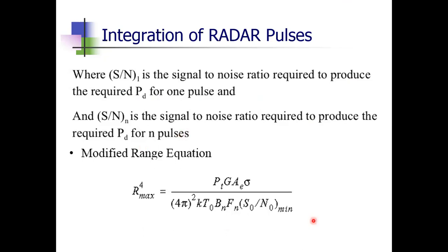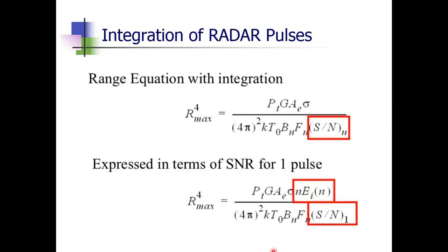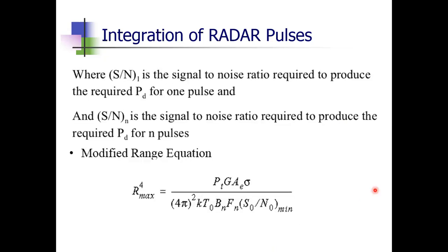The expression shown is the modified radar range equation derived in previous topics: Rmax⁴ = Pt × G × Ae × σ / (4π)² × kTB × Fn × (S/N)out. Here kTB is the input noise, Fn is the noise figure, and (S/N)out is the output SNR. When this SNR term is minimum, Rmax is maximum. Previously we considered only one pulse in this equation without integration.